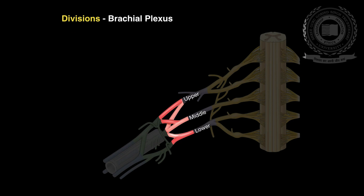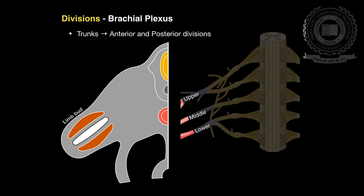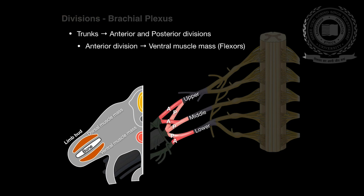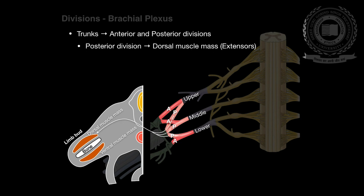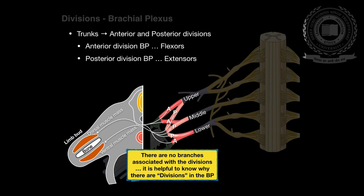Divisions: each trunk splits into an anterior division and a posterior division, which separate the innervation of the ventral and dorsal aspects of the upper limb. Each trunk has two divisions — one anterior and one posterior. To understand why, we go back to embryological development: in the cross-section of a developing embryo, there is a developing limb bud with a bone in the middle and a dorsal and ventral muscle mass. The anterior divisions of the brachial plexus send their axons to the ventral muscle mass, which are basically the flexors, and the posterior divisions send motor neurons to the dorsal muscle mass, which are the extensors. There are no branches in the divisions.